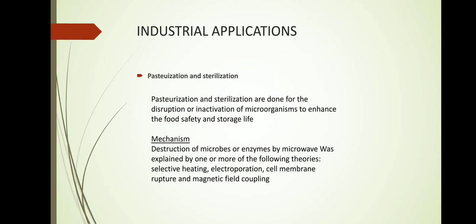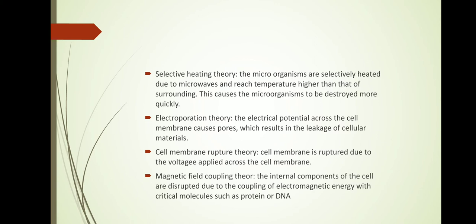There are four theories: selective heating, electroporation, cell membrane rupture, and magnetic field coupling. In selective heating theory, microorganisms are selectively heated by microwaves and reach temperatures higher than their surroundings, causing them to be destroyed more quickly. In electroporation theory, the electrical potential across the cell membrane creates pores, resulting in leakage of cellular material, thereby destroying the microorganisms. Cell membrane rupture theory involves membrane rupture due to voltage applied across it. In magnetic field coupling theory, internal components of the cell are disrupted due to coupling of electromagnetic energy with critical molecules such as protein or DNA.